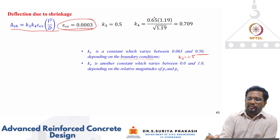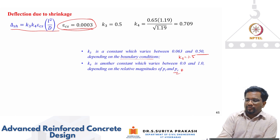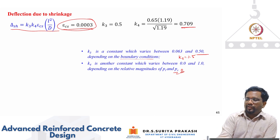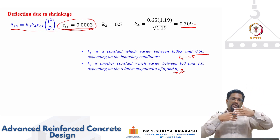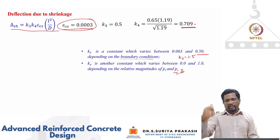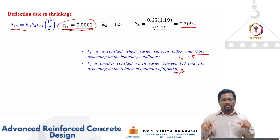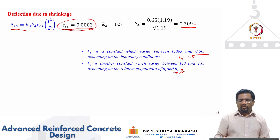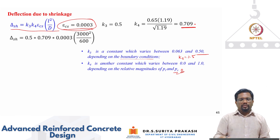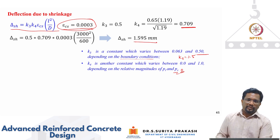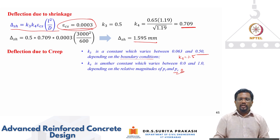Substituting into the k4 formula: k4 = 0.65 × 1.19 / √1.19 = 0.709. If the difference between Pt and Pc is large, k4 is also large. Even including the nominal hanger bars would not change k4 significantly from 0.7. Plugging all values into the shrinkage deflection formula gives δ_sh = 1.595 mm — which is not negligible.